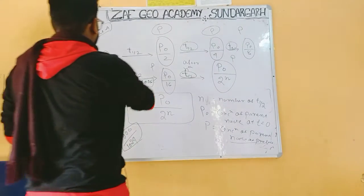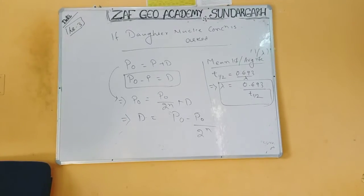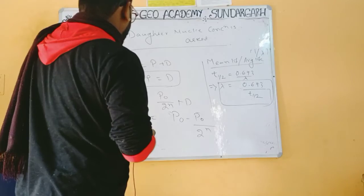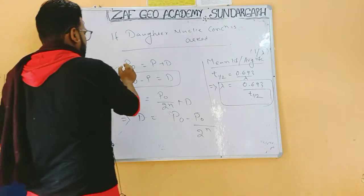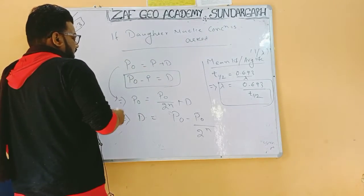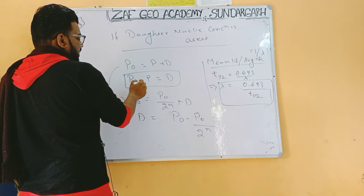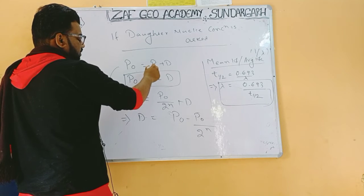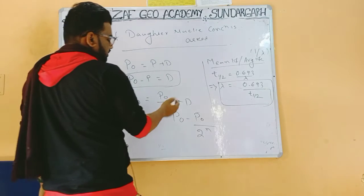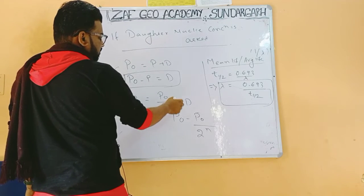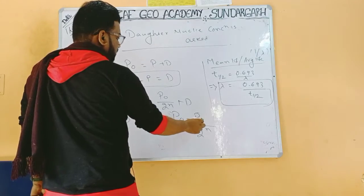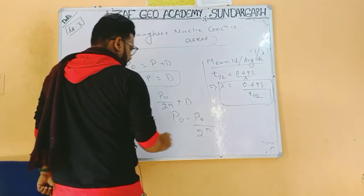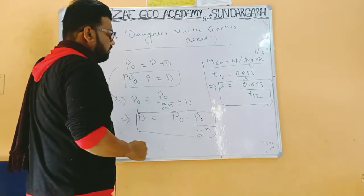If the daughter concentration D is asked, we use P₀ = P + D, which I derived in the previous lecture, so D = P₀ − P. Since P = P₀/2ⁿ, we get D = P₀ − P₀/2ⁿ. This is the important formula for calculating daughter nuclei concentration.